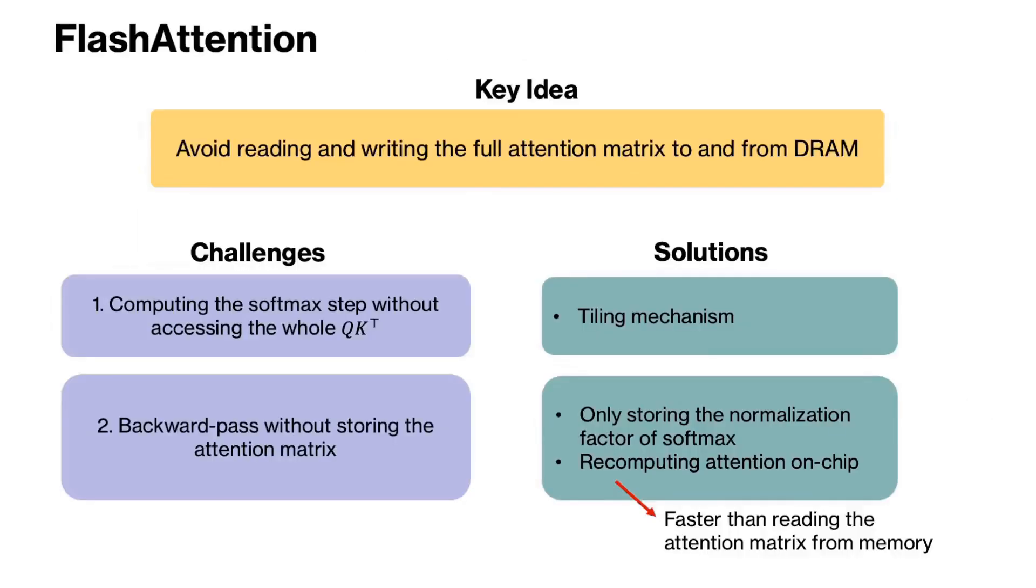However, there are two challenges that flash attention needs to address in order to avoid storing the full attention matrix in the memory. The first challenge is that we need to calculate the softmax without storing the entire attention score matrix or QK transpose. To solve this challenge, flash attention uses a tiling mechanism that gradually computes the output of attention.